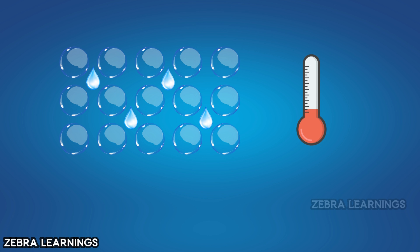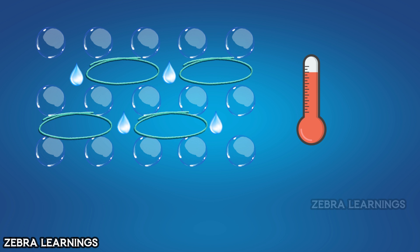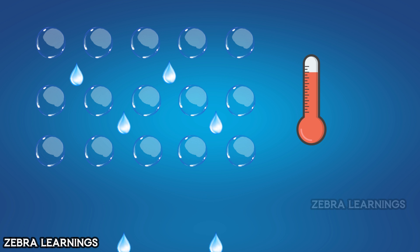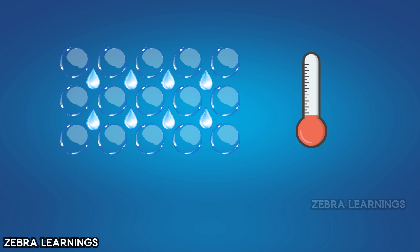When the air temperature increases, the air molecules expand. As the molecules expand, more empty space is created in the air. This additional space allows for more water vapor to be stored. When the air temperature decreases, the air molecules compress, reducing the space available. Therefore, less water vapor can be stored when the temperature is lower.